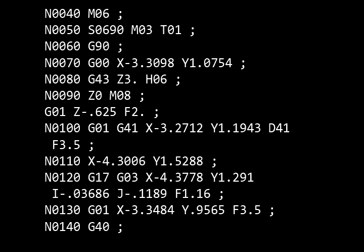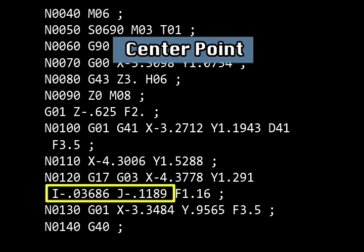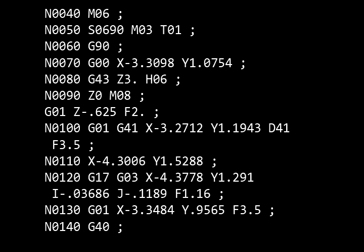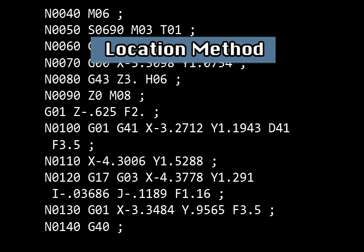The next item programmed in the data block is the center point. As mentioned earlier, there are two ways in which the center point can be programmed: the location method and the radius method.